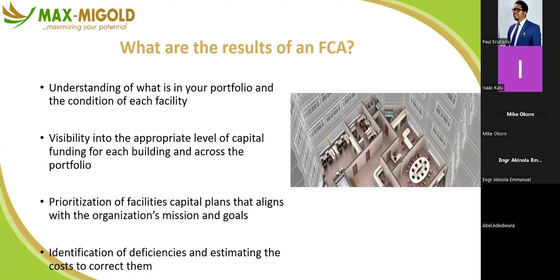If you are maintaining a facility for a client, you abide by your own organization's mission and goal — not the client's, because their vision is different. You will also be able to identify deficiencies and estimate the cost of correcting them. For example, if leakages on the first floor are affecting the ground floor and making it unattractive to tenants, you need to address that leakage quickly.